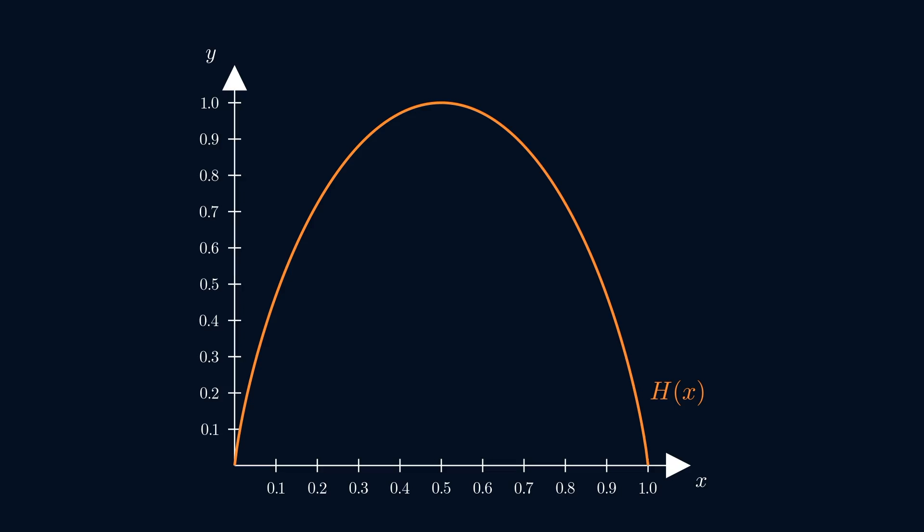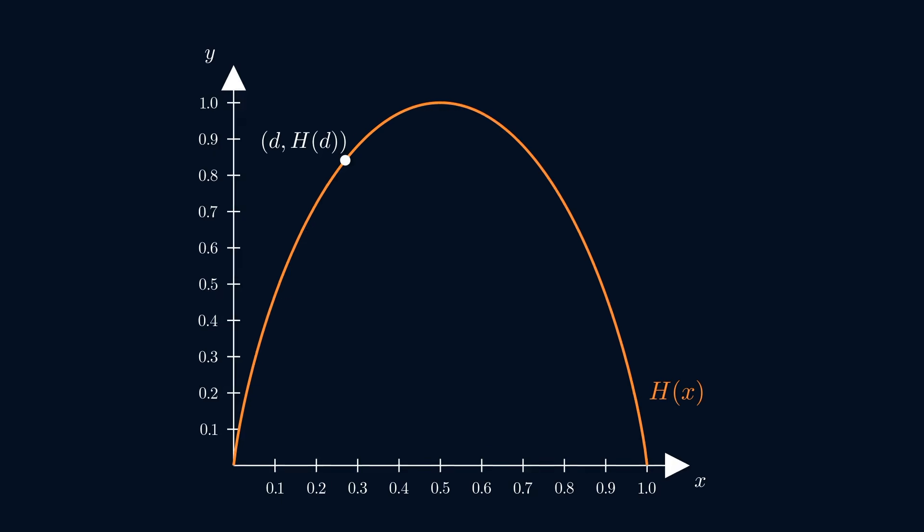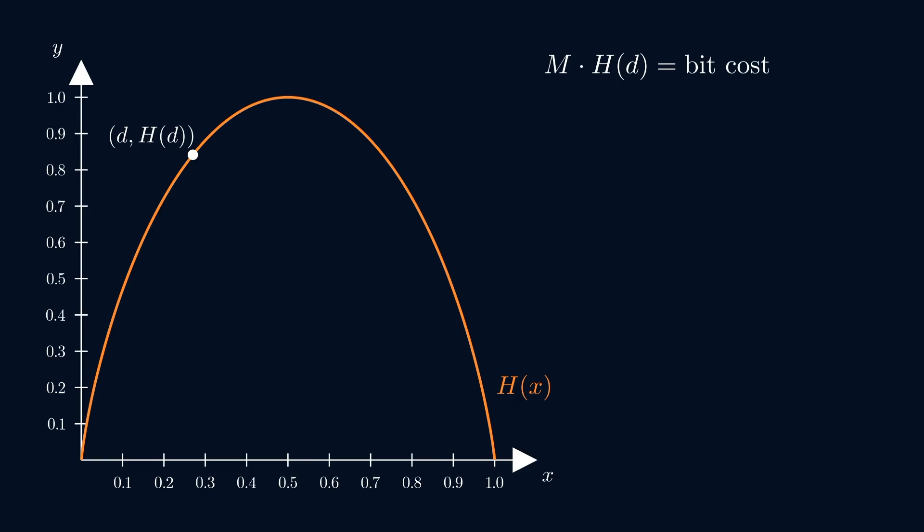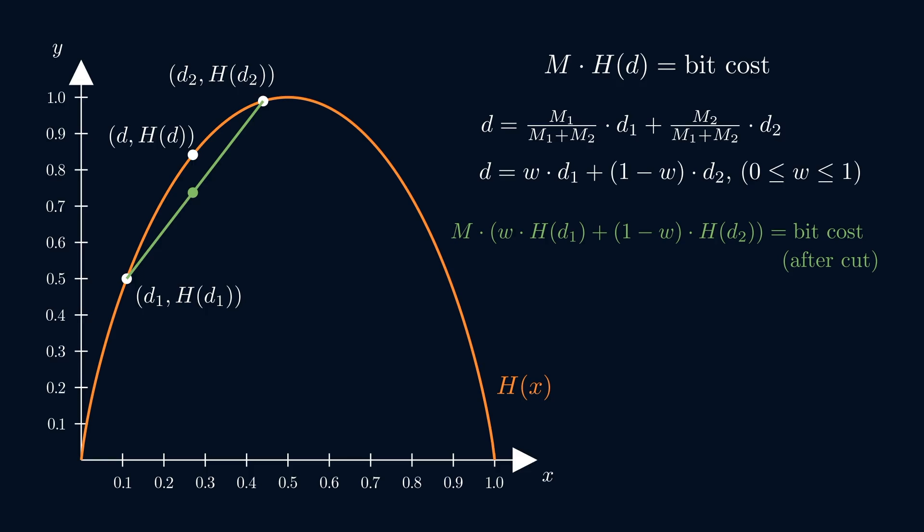To better understand what's going on here, consider this plot of H, the binary entropy function. Let's suppose that our aggregate word density is D. H tells us how many bits we need to spend on average to encode each action. Suppose now that we've cut our space into two subspaces with word densities D1 and D2. Then D is a weighted average of D1 and D2. We can write the total cost of separately encoding these subspaces in terms of the weighted average of their individual encoding costs. Perhaps surprisingly, the result is always less than or equal to the original cost. And that's precisely because H is a concave function.